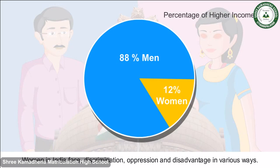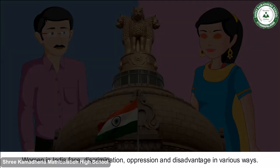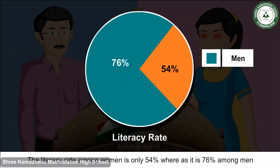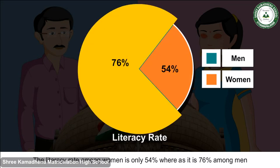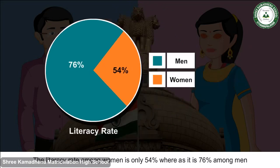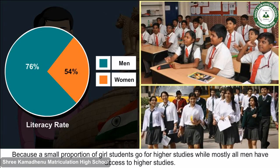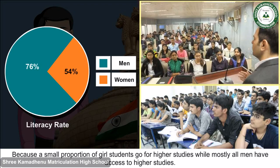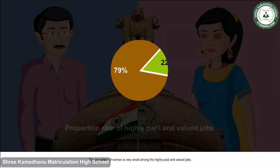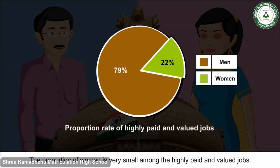Women in India face discrimination, oppression and disadvantage in various ways. For example, the literacy rate among women is only 54%, whereas it is 76% among men, because a small portion of girl students go for higher studies while most men have access to higher studies.